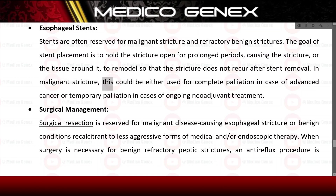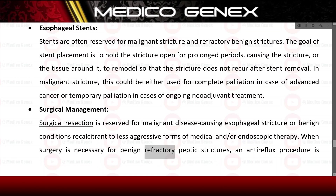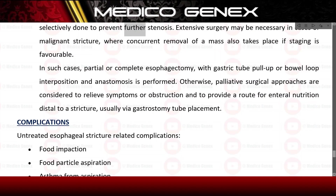In malignant stricture, stents can be used for complete palliation in advanced cancer or temporary palliation during ongoing neoadjuvant treatment. Surgical resection is reserved for malignant disease causing esophageal stricture or benign conditions recalcitrant to less aggressive forms of medical and/or endoscopic therapy. When surgery is necessary for benign refractory peptic strictures, an antireflux procedure is selectively performed to prevent further stenosis.